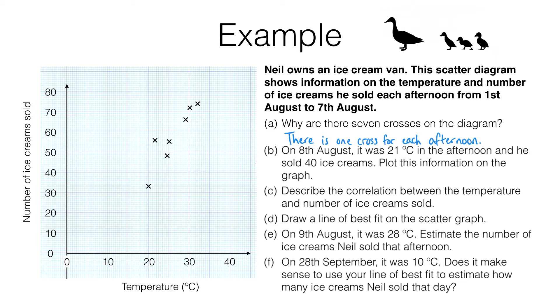Notice, by the way, that just from this diagram we can't tell which cross represents which date, but we know that the seven of them put together cover the seven afternoons from the 1st to the 7th of August.